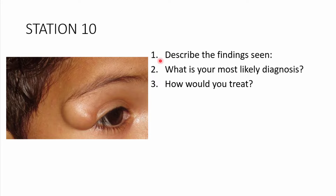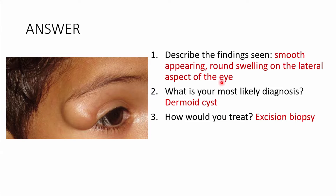Station 10: Study the image, describe the findings, what is the most likely diagnosis, and how would you treat the condition? The answer: this is a smooth, round swelling on the lateral aspect of the eye — most likely on the right side — and this is most likely a dermoid cyst. Treatment is by excision. You can perform an excision biopsy and send it to histopathology to confirm it is not malignant.